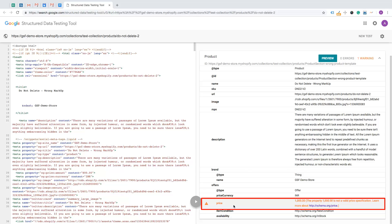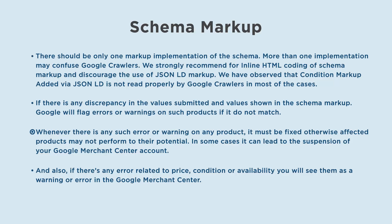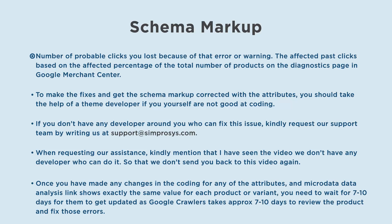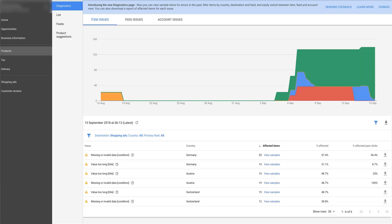If there is any discrepancy in the values submitted and values shown in the schema markup, Google will flag errors or warnings on such products. Whenever there is any such error or warning, it must be fixed; otherwise, affected products may not perform to their potential, and in some cases it can lead to suspension of your Google Merchant Center account. In Google Merchant Center, you will see a number of probable clicks lost due to that error or warning. For example, in this case, Google says approximately 57% of products don't have condition markup and approximately 36% of clicks are affected.